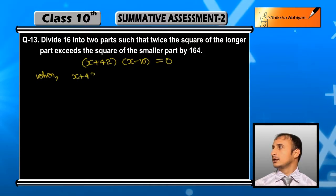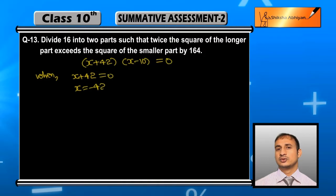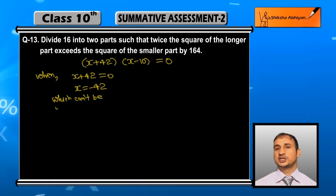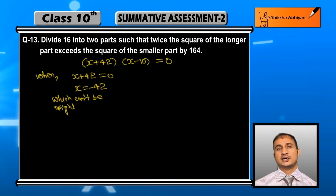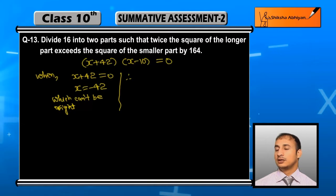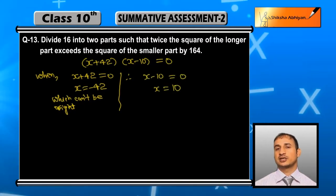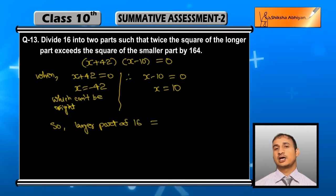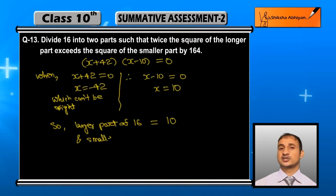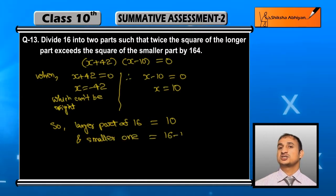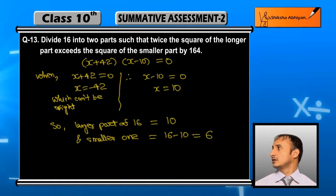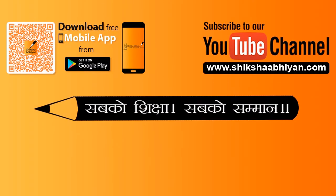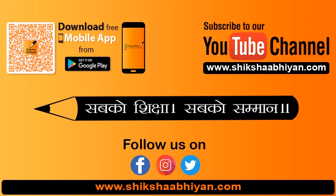When x + 42 = 0, therefore x = −42 — यह possible नहीं है क्योंकि दोनों numbers positive होने चाहिए, दोनों का sum 16 है, so negative value नहीं हो सकती। And when x − 10 = 0, x = 10 — यह हमारा answer है. So larger part of 16 is 10, and smaller part is 16 − 10 = 6. So the two parts are 10 and 6.